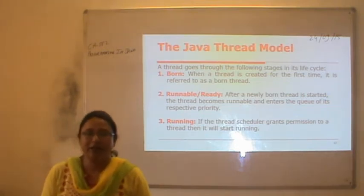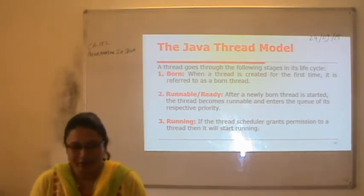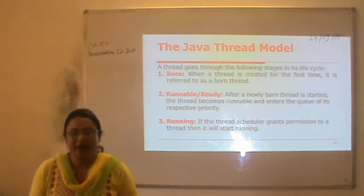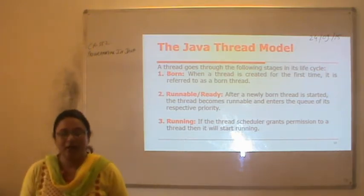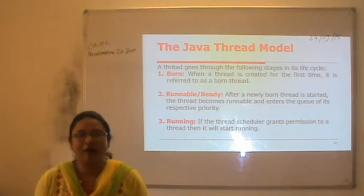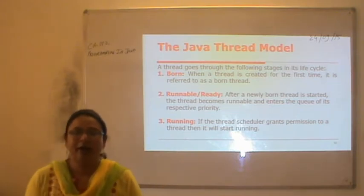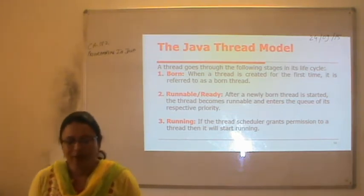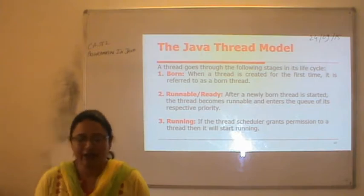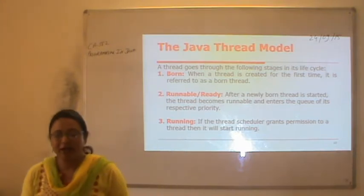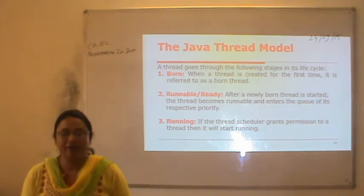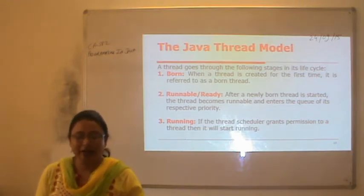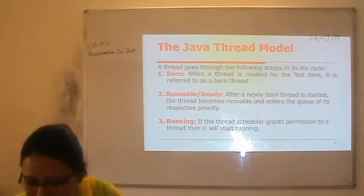The second state is runnable, also called the ready state. After a newly born thread is started, it becomes runnable and enters the queue of its respective priority. After the thread is born, it comes to the ready state. The third stage is running: from the ready state, the thread moves to the running state.